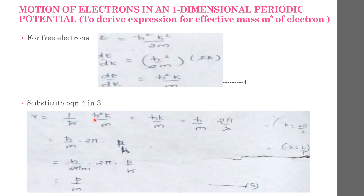One factor of ℏ cancels, giving v = ℏk/m. Substituting k = 2π/λ, we get v = (ℏ/m)(2π/λ). Again substituting λ = h/p, and h̄ = h/2π, the h's and 2π's cancel, and we get v = p/m, equation 5.